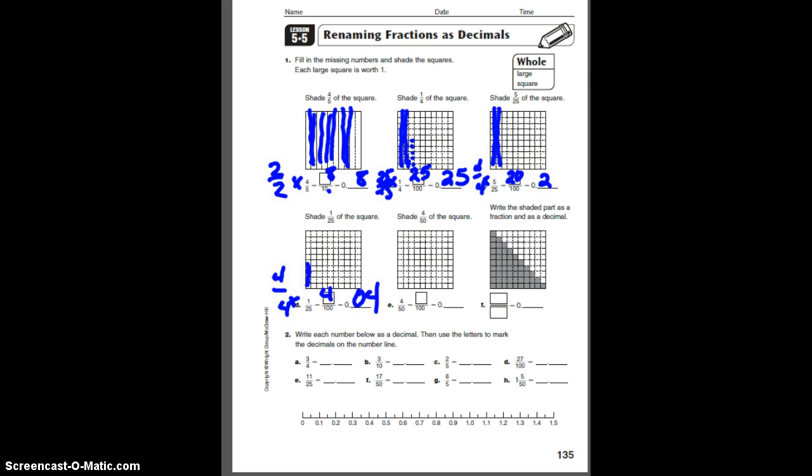4 fiftieths on this one, you're going to want to multiply it by 2 over 2. 50 times 2 is 100. 4 times 2 is 8. Sometimes you can just do this mentally. But for this, we'll do it the long way. 8 hundredths, don't write .8, that's 8 tenths. We want it to be 8 hundredths, so you need that zero in there. And 8 boxes. You can start anywhere you like. 1, 2, 3, 4, 5, 6, 7, 8. 8 hundredths on that one.